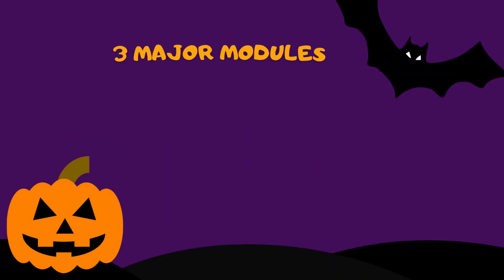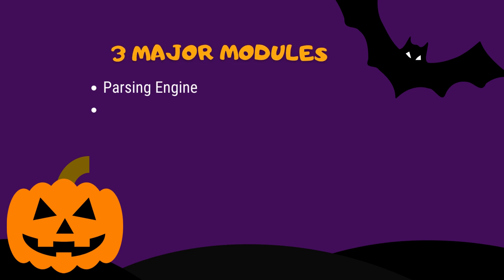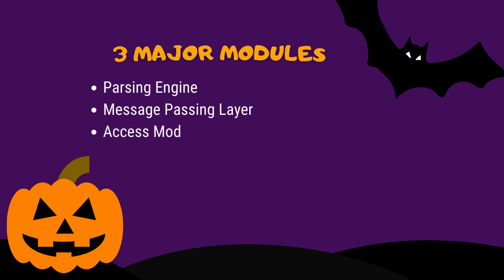To start with, there are three major modules of Teradata architecture. The first one is the Parsing Engine, the second one is the Message Passing Layer, and the third one is the Access Module Processor, also called AMPs. Virtual disks are also part of it.